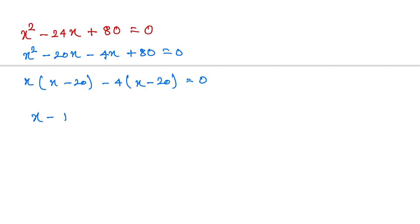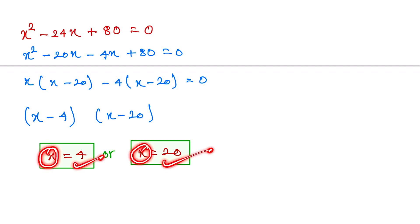(x - 4) and (x - 20). From here, the value of x equals 4 and the value of x equals 20. This one is the value of x: x = 4 and x = 20, and this one is our final answer.